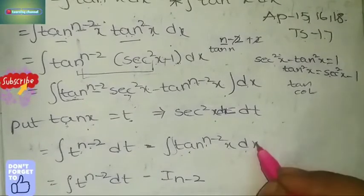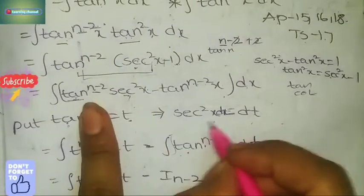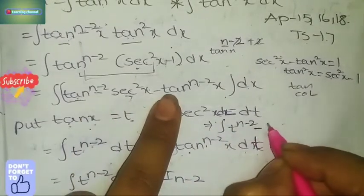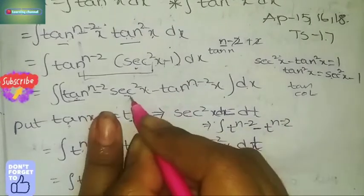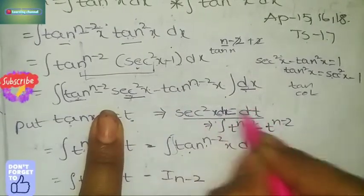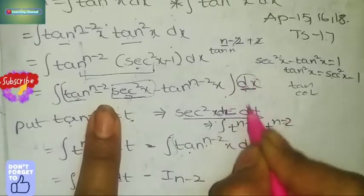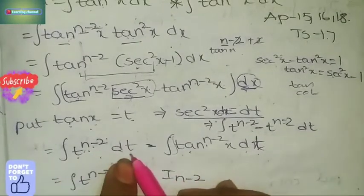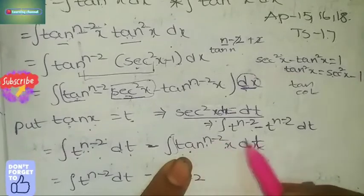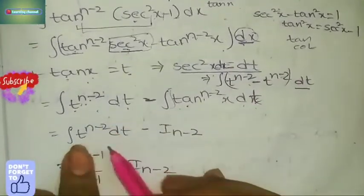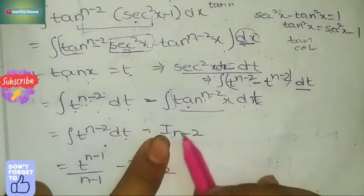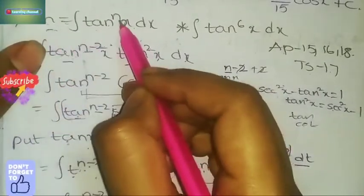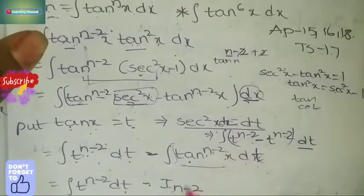In this step, we separate the integration. Integral t^(n-2) dt minus integral tan^(n-2) x dx. We denote the second integral as I_(n-2), since from the start I_n = integral tan^n x dx — when n is there, we write I_n; when n-2 is there, we write I_(n-2).